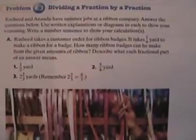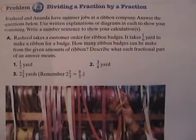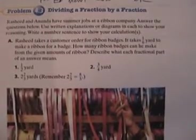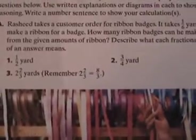Let's see, Rashid takes a customer order, there we go, there's a diverse name. Customer order for ribbon badges. It takes one sixth yard to make a ribbon for a badge. How many ribbon badges can be made from the given amounts of ribbon? Describe what fraction or part of an answer means. How many sixths would fit in one half yard, three quarters, two and two thirds. They don't really explain how you would do that.